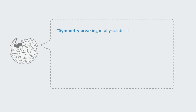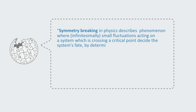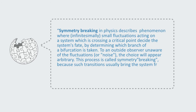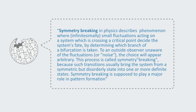Wikipedia defines it as: "Symmetry breaking in physics describes a phenomenon where infinitesimally small fluctuations acting on a system which is crossing a critical point decide the system's fate by determining which branch of a bifurcation it takes. To an outside observer unaware of the fluctuations or noise, the choice will appear arbitrary. This process is called symmetry breaking because such transitions usually bring the system from a symmetric but disorderly state into one or more definite states." Symmetry breaking is supposed to play a major role in pattern formation.